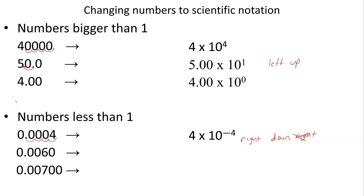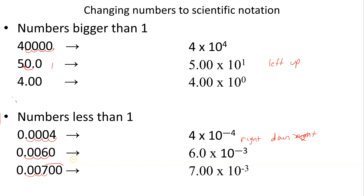Next one: how many significant numbers do you see? Two — six and zero. So it's going to be 6.0 times 10 to the... how many times do you have to move the decimal point? One, two, three — so it's 6.0 times 10 to the negative three. For this one, how many significant numbers do you see? Three of them — one, two, three — gives you 7.00 times 10 to the negative three.